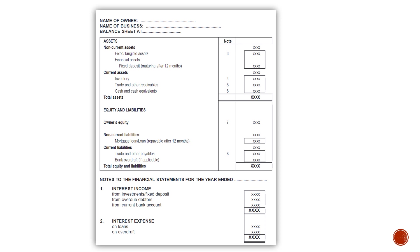Under equity and liabilities, owner's equity will be calculated in note 7. Non-current liabilities will be a mortgage loan — a loan to buy property that you repay over a period longer than 12 months. Current liabilities are your short-term liabilities, repayable within the next 12 months, and include trade and other payables and bank overdraft if applicable. Adding owner's equity, non-current liabilities, and current liabilities gives you total equity and liabilities.